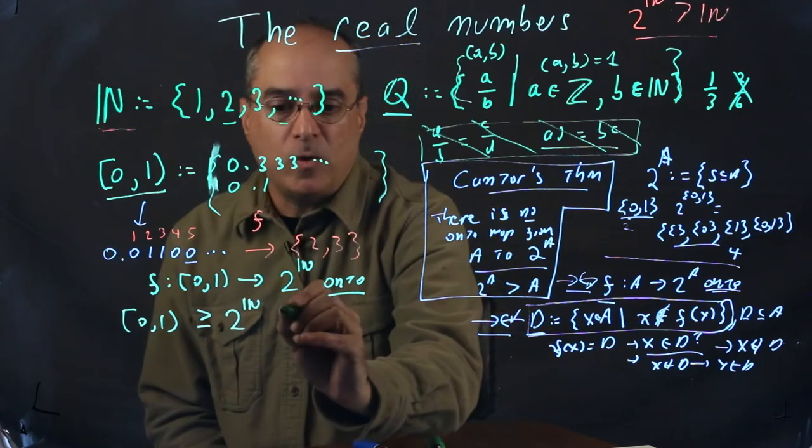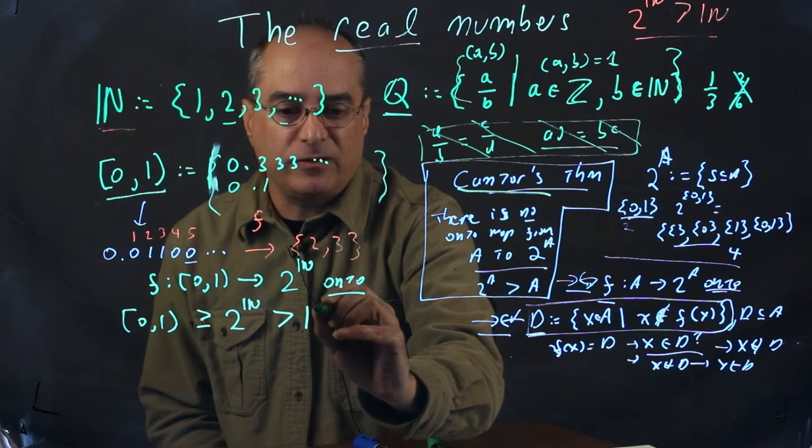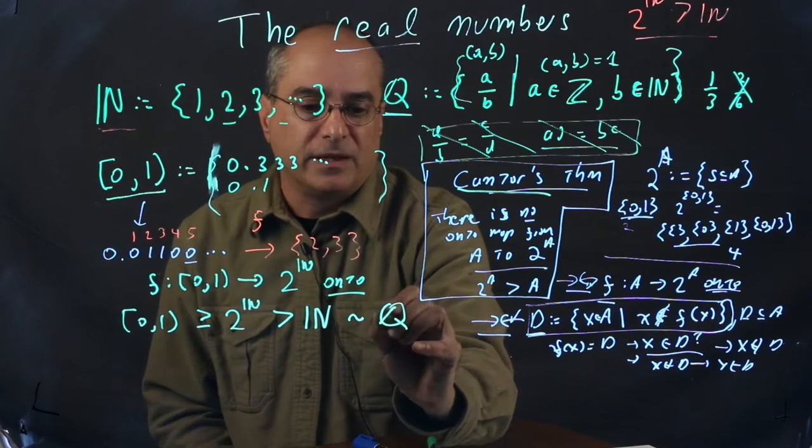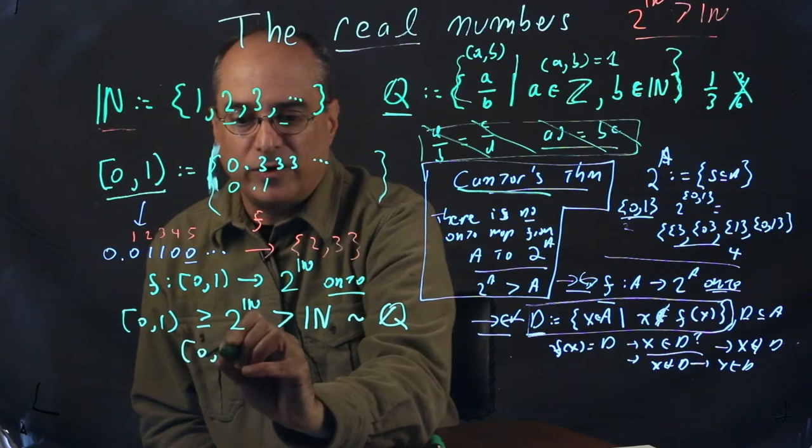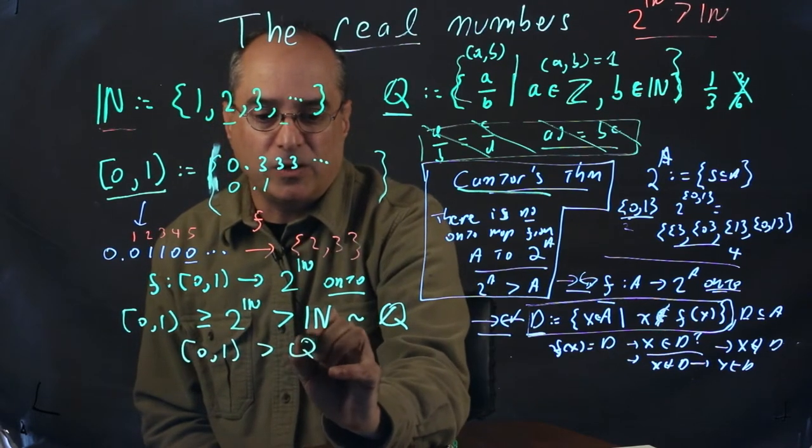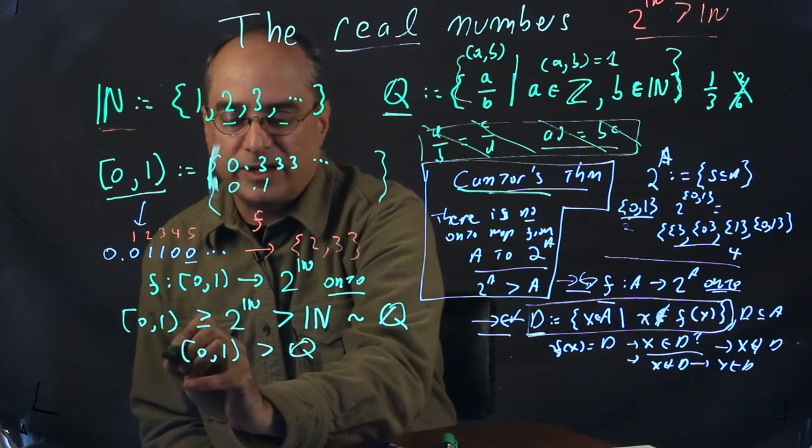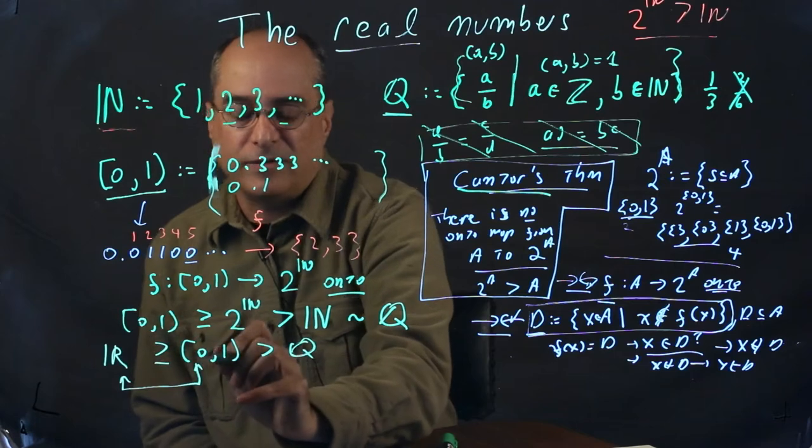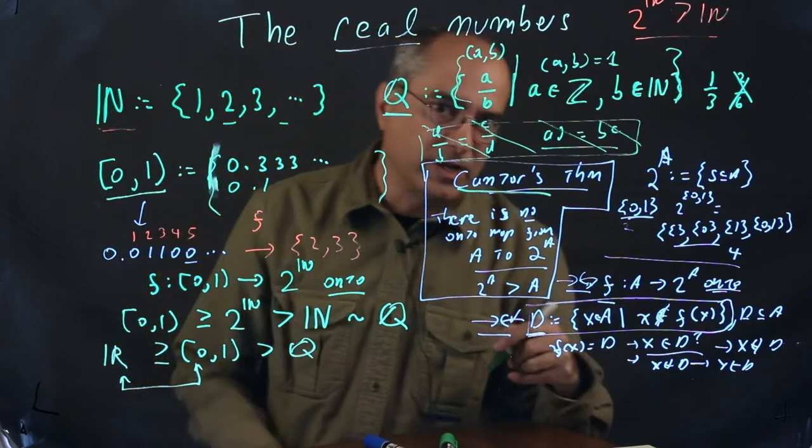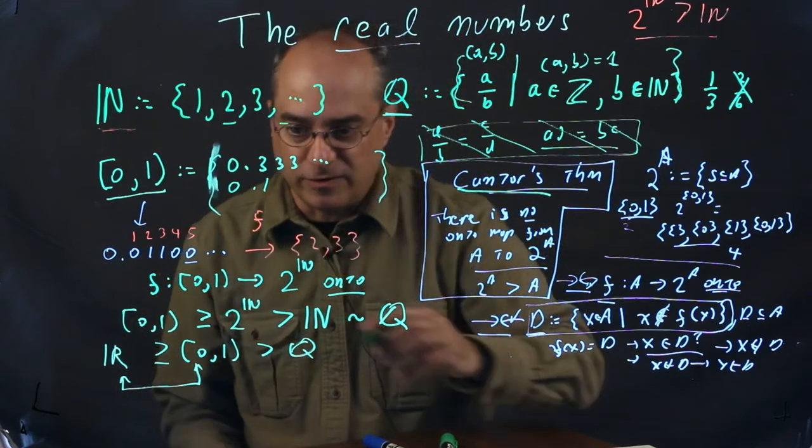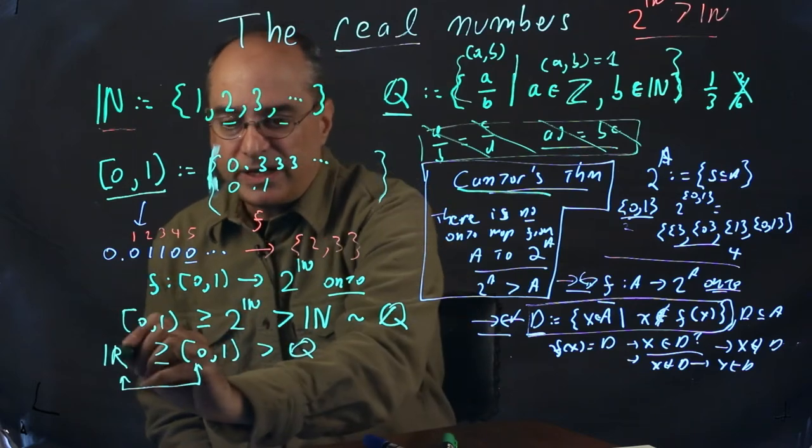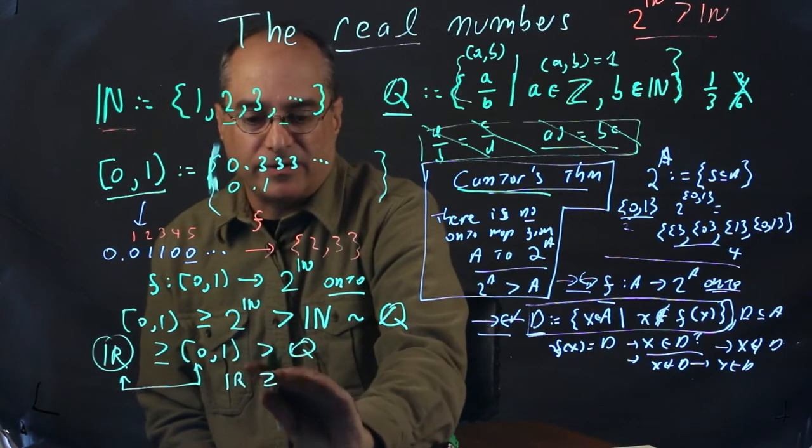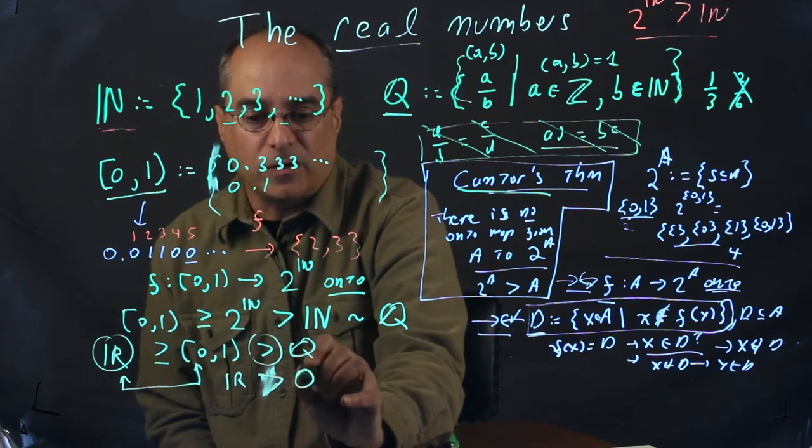Okay? Now we know by Cantor's theorem, 2 to the N is strictly larger than N. And then we're going to show that N is about the same size as Q. Then by transitivity, we get [0, 1] is much greater than Q. And [0, 1], you know, it's certainly, it's a subset of R. So R is certainly no smaller, in fact, really in set theory terms, these have the same size. It's easy to build a map from this to that. Like the logit function will do that. There's even continuous functions that do this. So this is not too surprising. And that will complete our claim that R, the real numbers, is greater than Q. And we'll be done. So the only thing that remains to show for this construction is that N and Q are about the same size.